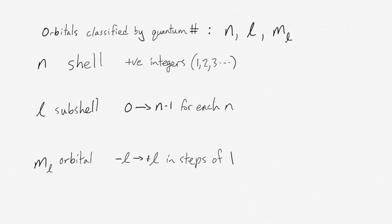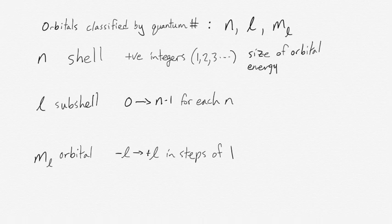So n, the shell, corresponds to the size of the orbital and the energy of those electrons. The bigger the n value, the bigger the orbital and the more energetic the electrons. The value of l, which is the subshell, corresponds to the specific type of orbital that exists within a certain shell.